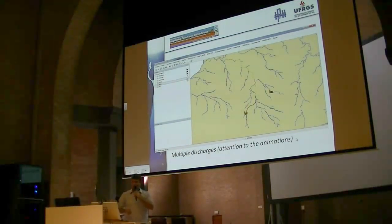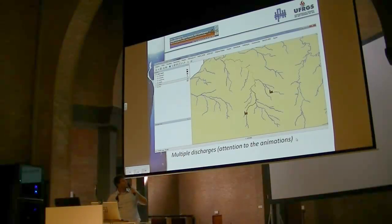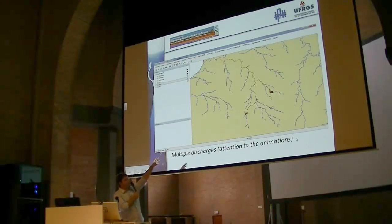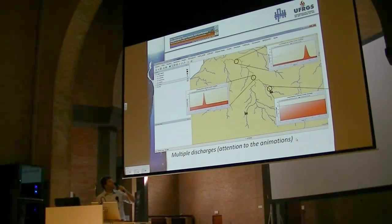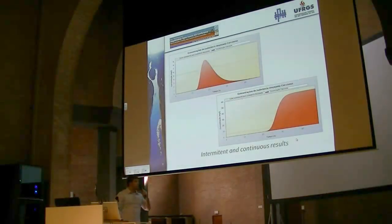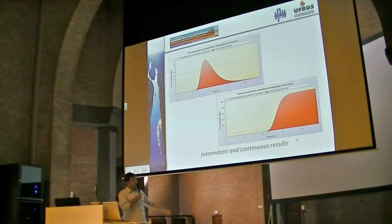You can also input multiple discharges in the same basin. Now I'm going to add a discharge for another industry. Now they are represented together in the basin, and you can access the pollution graphs of different places. Those are other graphs for other kinds of discharge, like intermittent and continuous discharge.